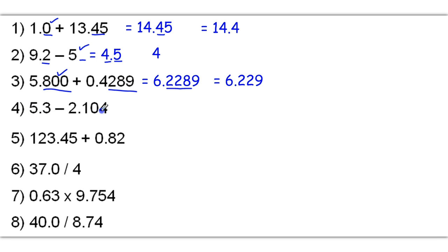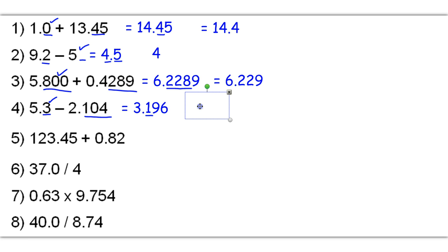Number 4: 5.3 minus 2.104 gives me a raw answer of 3.196. Because this only has one decimal place and this has 3 decimal places, we're going to go with one decimal place. So I want to round off right here — that 1 will round up based on the 9, and so my final answer will be 3.2.